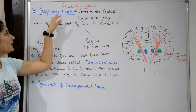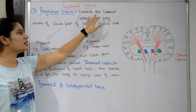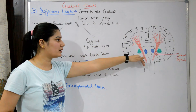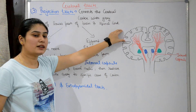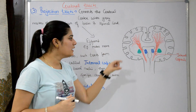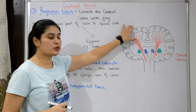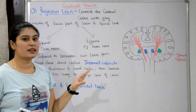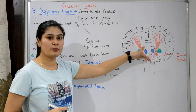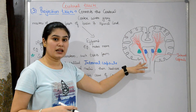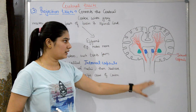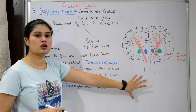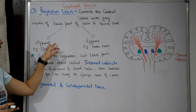The corpus callosum connects from right to left cerebral hemisphere. The third type is projection tracks. Projection tracks connect the cerebral cortex with grey matter of lower parts of the brain and spinal cord. Projection tracks are of two types: afferent and efferent. Remember: A comes before E, so afferent means tracks going to the brain, and efferent means tracks going away from the brain.